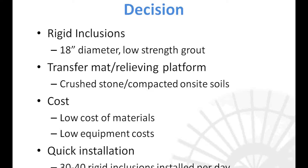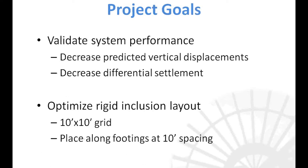After the owner decided on this system, the team had to validate that it would perform. We were hired to validate that the system would reduce the risk of settlement. Because of the complex footing geometry and use of inclusions, the reasonable approach was a 3D finite element analysis. Using the 3D analysis, vertical displacements and corresponding differential settlements were found for three different scenarios: the hotel on shallow foundations only for comparison, inclusions on a 10-foot by 10-foot grid, and inclusions placed along the footings at about 10-foot spacing.